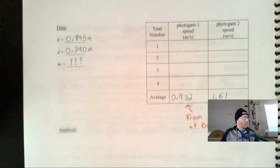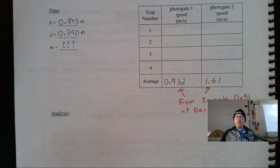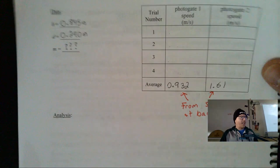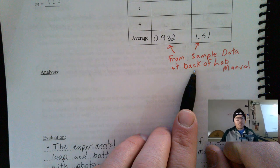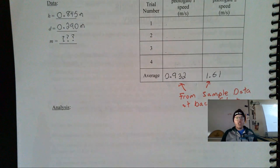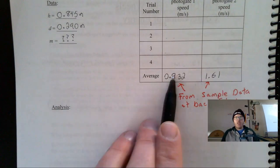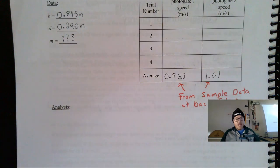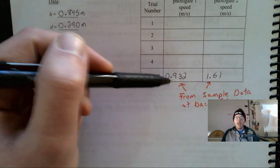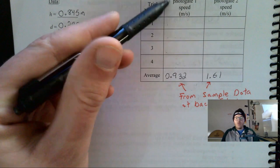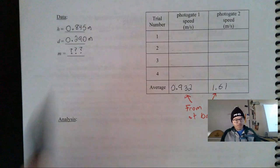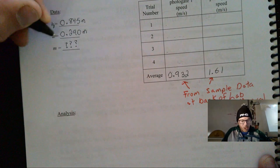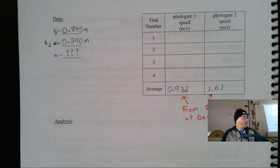The data I have today is from the back of the lab manual — the sample data. If you were away, flip to the back of your lab manual and copy it into your notebook. I recorded the average trials for the two speeds rather than multiple individual trials. At the top of the loop, that's photogate one; at the bottom, photogate two. We also have height one, height two, and we don't know the mass of the car, so that's something we'll deal with in the analysis.